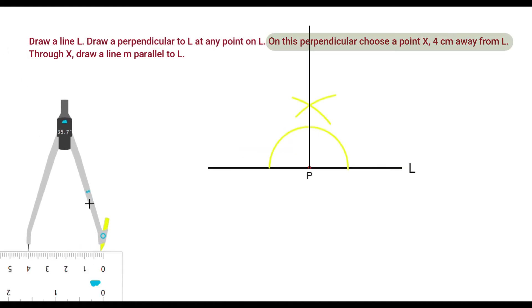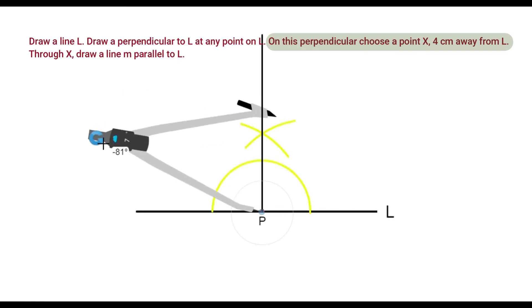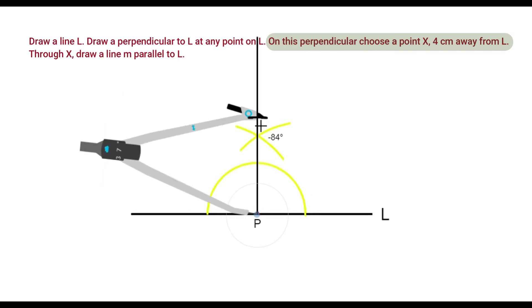Adjust the compass up to length of 4 cm and place the pointed tip of the compass at P. And, draw an arc that cuts this perpendicular. We will mark this point as X.